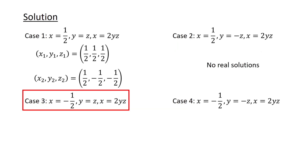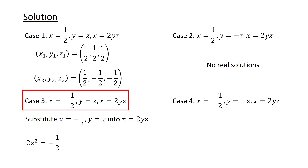For Case 3, we substitute x equals minus half and y equals z into the equation x equals 2yz, to obtain 2z squared equals minus half. Since the left-hand side is non-negative while the right-hand side is strictly negative, there are no real solutions for this case.